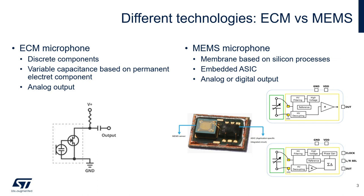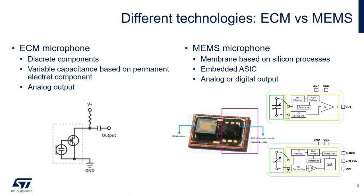On the other side, a MEMS microphone is a dual-die device consisting of two components: the sensor and the integrated circuit. The sensor uses MEMS technology and it is basically a silicon capacitor. The integrated circuit can perform several operations depending on the type of the microphone. It always implements a first analog stage to amplify and filter the capacitor output.